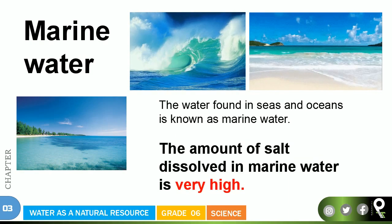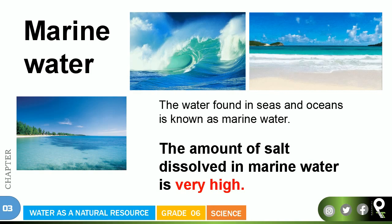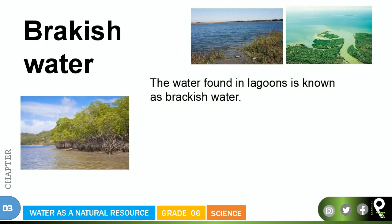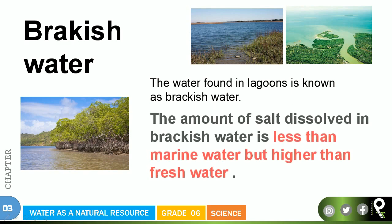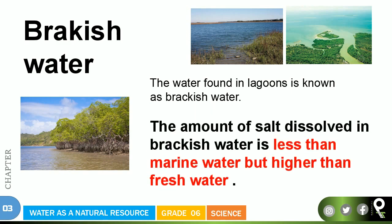Brackish water — the water found in lagoons — is known as brackish water. The amount of salt dissolved in brackish water is less than marine water but higher than fresh water. So if you were to taste fresh water versus brackish water, fresh water will not have as much salt as brackish water — but brackish water has salt, just less than seawater.